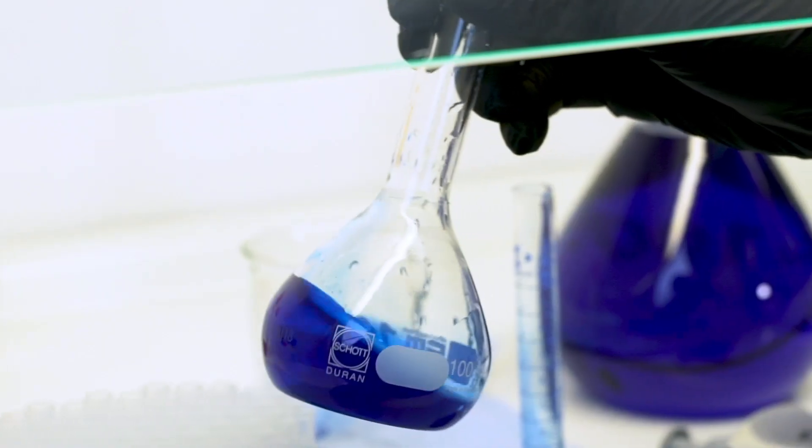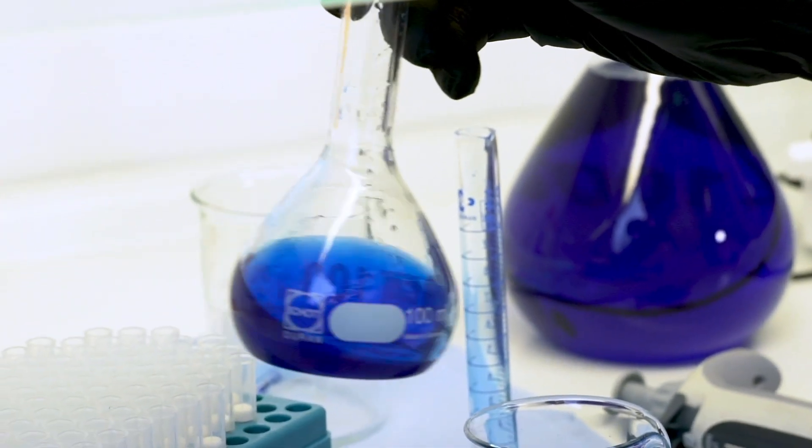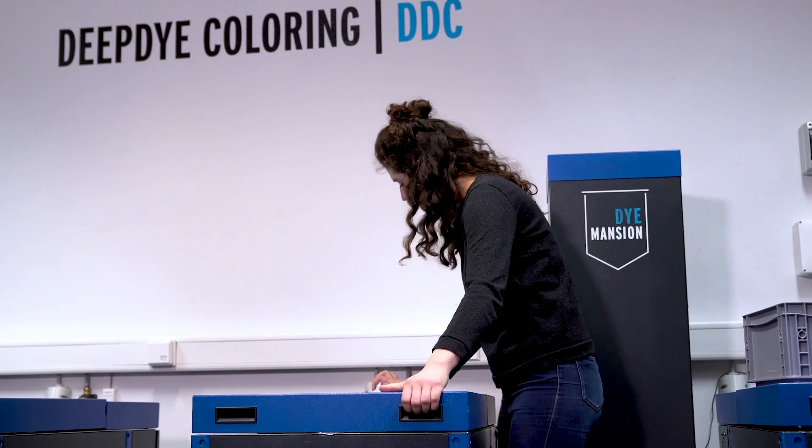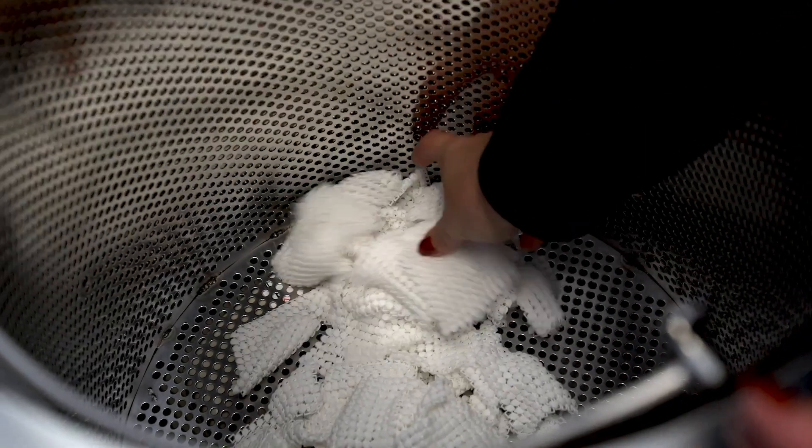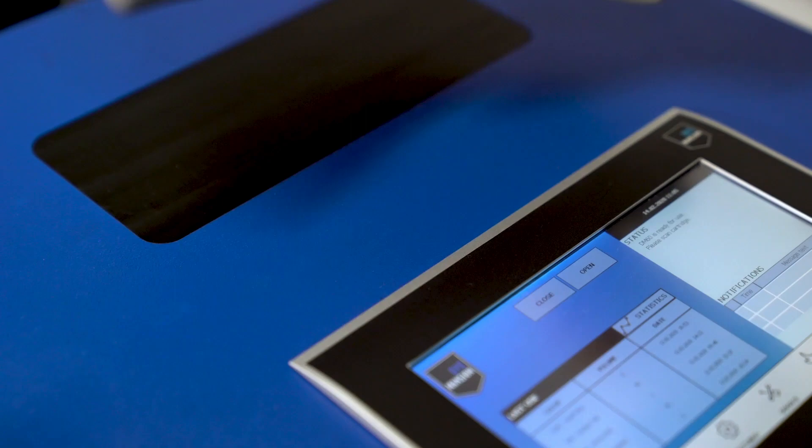The goal is to have a color that can be used to dye parts with our deep dye coloring, called DDC. It takes place in our DM60 and uses a cartridge system.